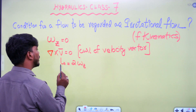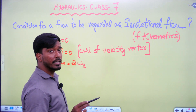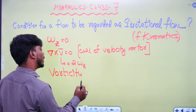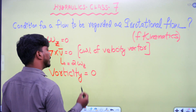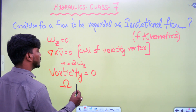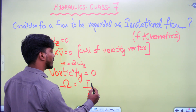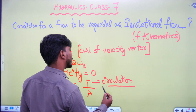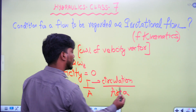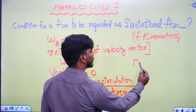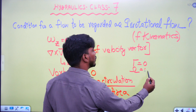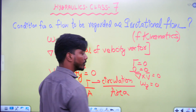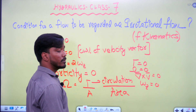The curl of velocity vector has one more formula — it equals circulation per unit area, which is called vorticity. Any one of these conditions can be asked: vorticity equals zero, circulation equals zero, curl of velocity vector equals zero, and angular velocity equals zero.